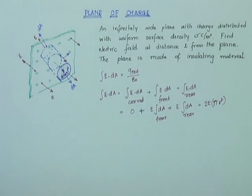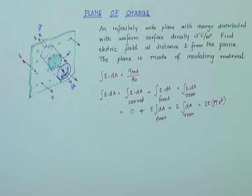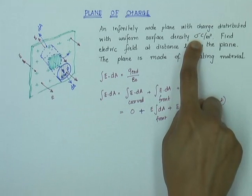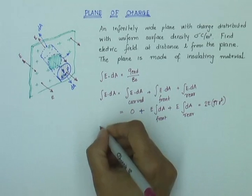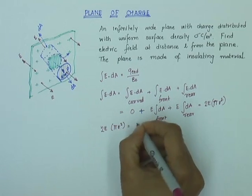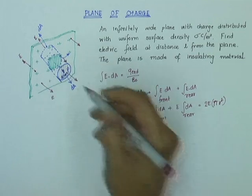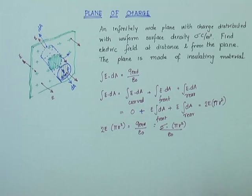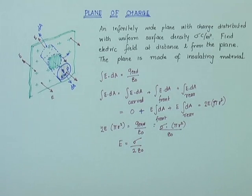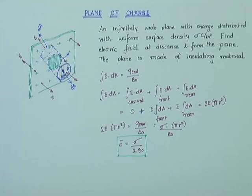Now what is Q enclosed? Q enclosed is the charge on the surface where my cylinder intersects the plane. If my charge density is sigma coulombs per meter square, then 2E·pi·R² = Q enclosed over epsilon zero. Q enclosed equals sigma times pi R squared. So pi R squared cancels and all I get is E equals sigma over 2 epsilon zero. That is the electric field due to an infinitely wide insulating plane of charge with charge density sigma coulombs per meter square.